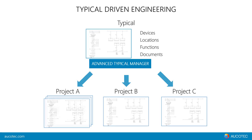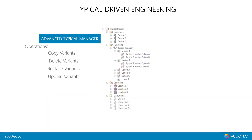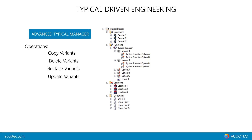On this slide we can see a simplified example of a typical project. We can see the different aspects — equipment, functions, and locations — as subsections inside the project. If you use the Typical Manager to copy a loop, for example, it will take care of all these aspects.